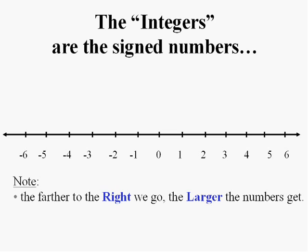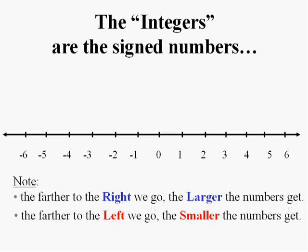Notice the farther to the right we go, the larger a number becomes on the line. Even if we're in the negatives, the farther to the right that we go, negative 1 is bigger than negative 2. And vice versa, the farther to the left that we go, the smaller a number becomes. It's important to note because it's going to get confusing in a little bit.